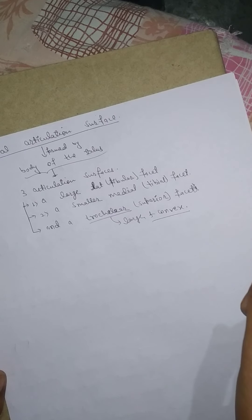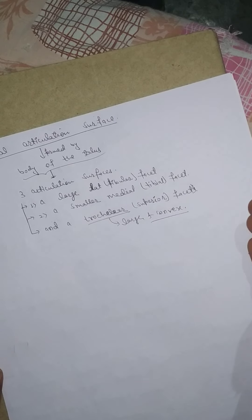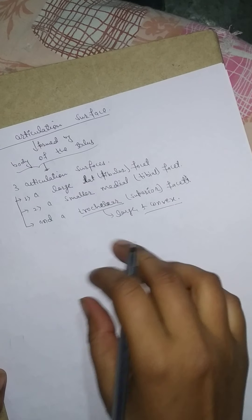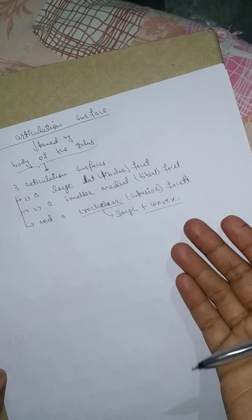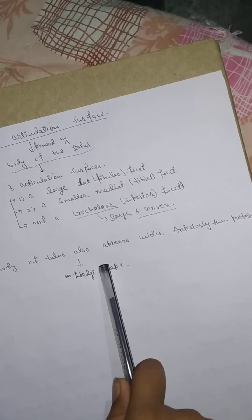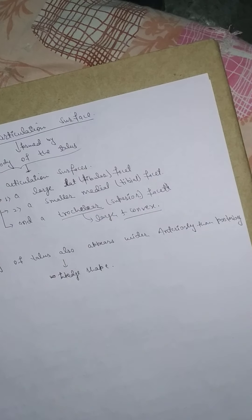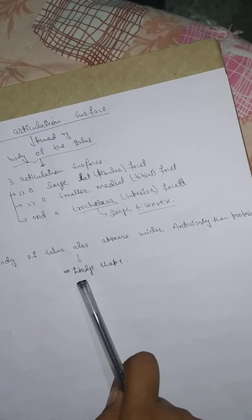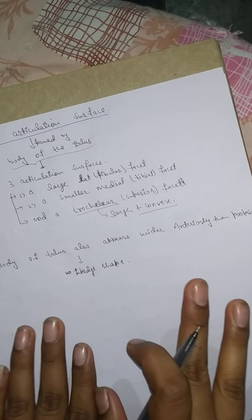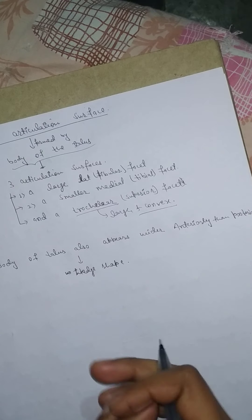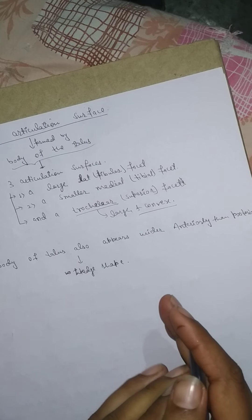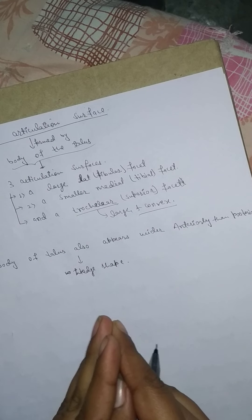The body of the talus also appears wider anteriorly than posteriorly, forming a wedge shape. The structural integrity of the ankle joint is maintained throughout the range of motion by a number of important ligaments, which will be discussed in the next video.